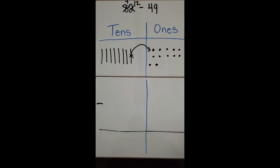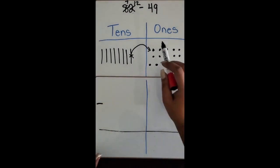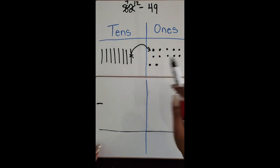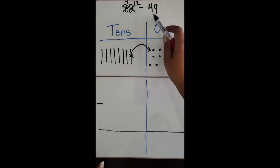So we have 10, 20, 30, 40, 50, 60, 70, 80, 81, 82. It's still 82. Now I want to subtract my number 49. Do I have enough ones to subtract nine ones? Yes.